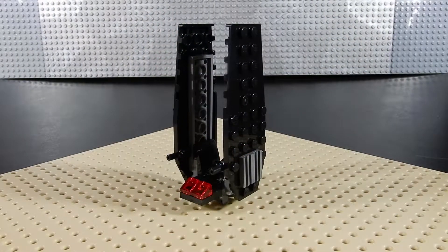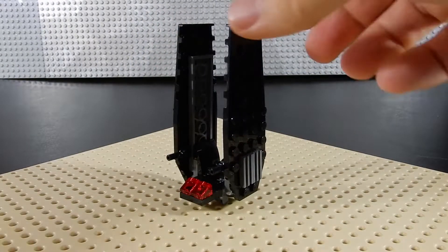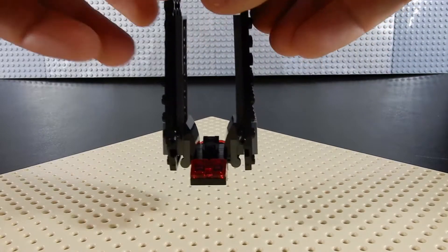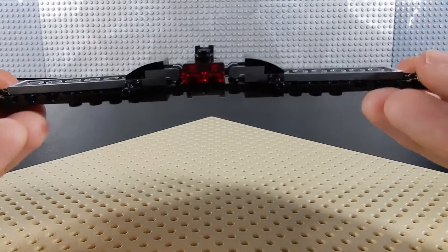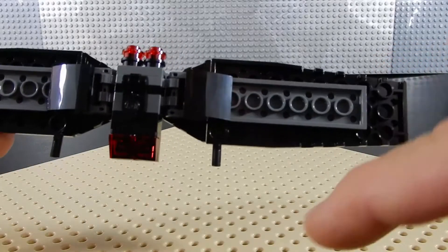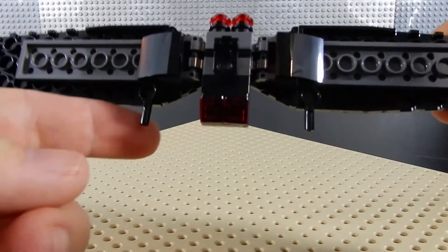And here we have our completed model. This one is far more movie accurate, in that the wings can fold down into flight position. We have a couple of guns mounted on the wings.